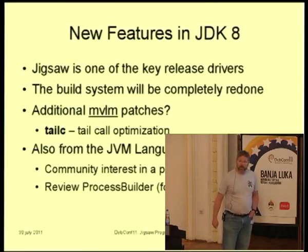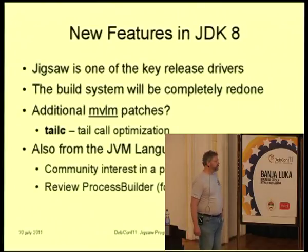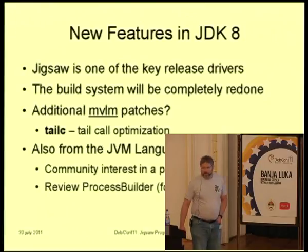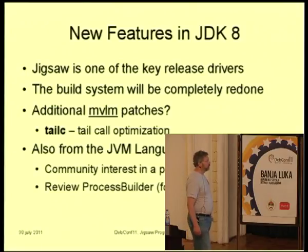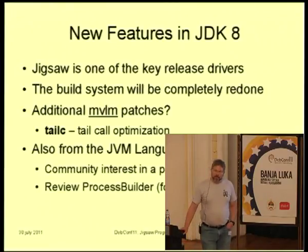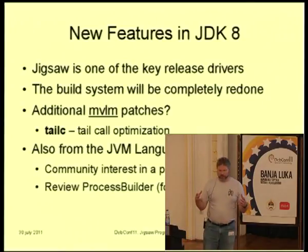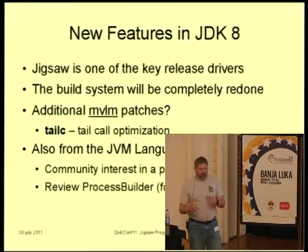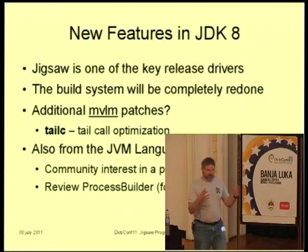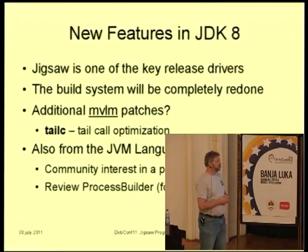Now JDK 8. It turns out that Jigsaw — the modularization of the JDK — is one of the primary drivers for JDK 8. There are a lot of features on the table, but Jigsaw is absolutely critical for JDK 8, so we're really ahead of the next generation of the upstream release here. One of the really interesting things I learned last week is that the build system for JDK 8 is going to be completely redone. Right now if you build Jigsaw, you go through a classic multi-stage build of classic Java and then there's a 'make modules' target as a second post-processing step. That's going to be eliminated. The build will start by building the base modules and then building up additional modules in the order of the dependency graph. That should make the build a lot quicker and more efficient, and also a lot cleaner overall.